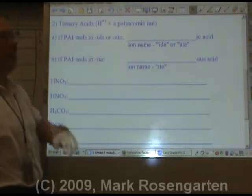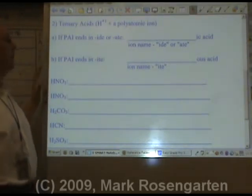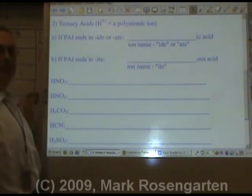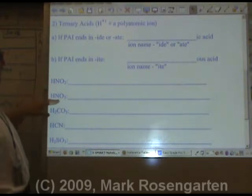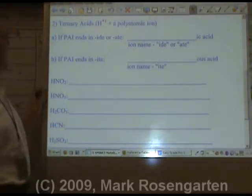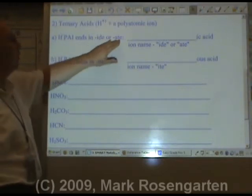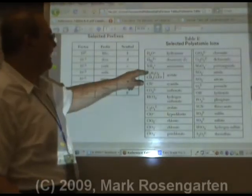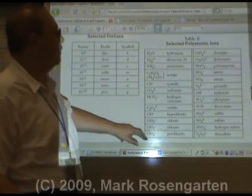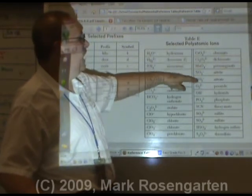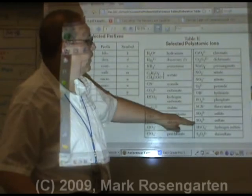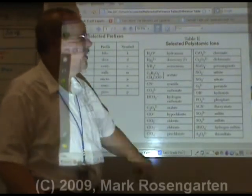Ternary acids have a polyatomic ion. You do not put 'hydro' in the name — that doesn't mean hydrogen isn't still there, it just won't appear in this part of the name. You name the acid for the polyatomic ion it contains. Polyatomic ions ending in -ate or -ide include: acetate, cyanide, carbonate, hydrogen carbonate, oxalate, chlorate, chromate, dichromate, permanganate, nitrate, peroxide, hydroxide, phosphate, thiocyanate, sulfate, hydrogen sulfate, and thiosulfate.